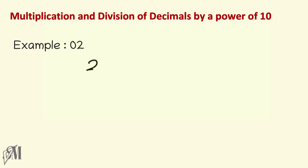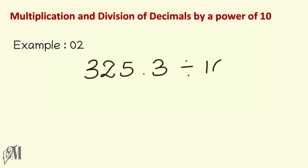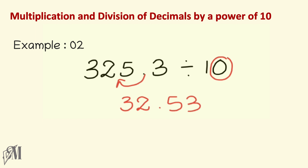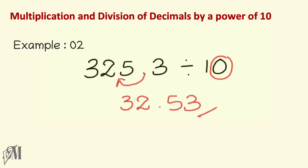Let's take a final example: 325.3 divided by 10. Since 10 has only one zero, we move the decimal point once to the left, giving the answer 32.53.